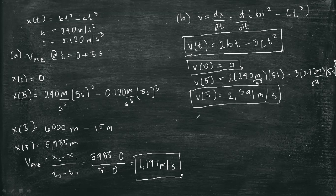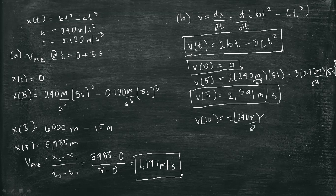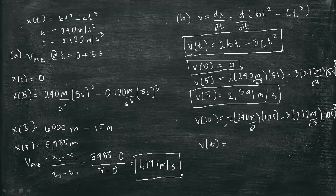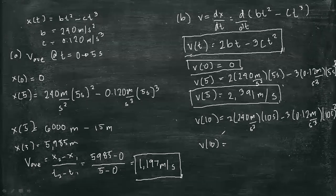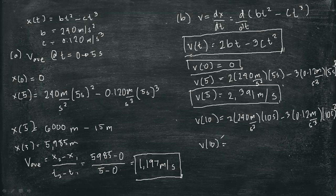And lastly for t = 10 seconds: v(10) = 2 × 2.40 m/s² × 10 s − 3 × 0.120 m/s³ × (10 s)². Therefore we have 4,755 meters per second.